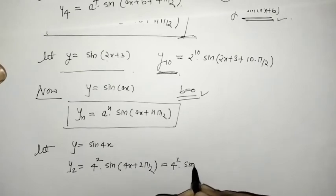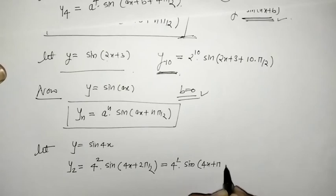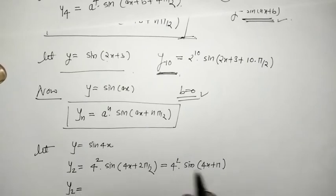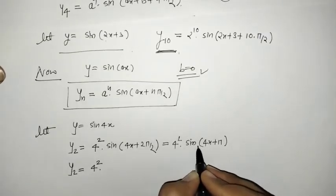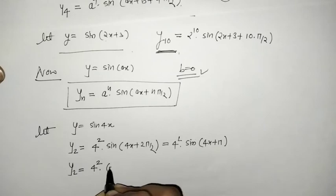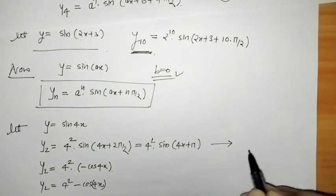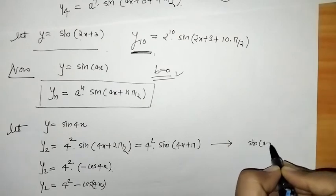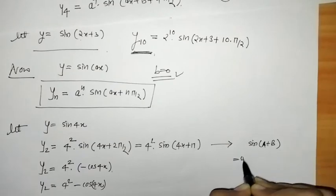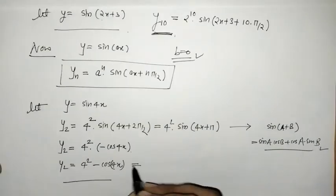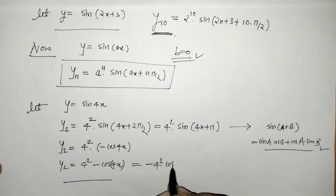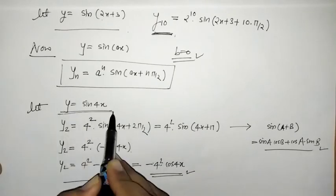So y2 = 16·sin(4x + π). We can simplify this using the identity sin(θ + π) = −sin θ. Thus y2 = 16·(−cos(4x)) — wait, applying the formula: sin(4x + π) = −sin(4x), which simplifies to give us the second derivative result.